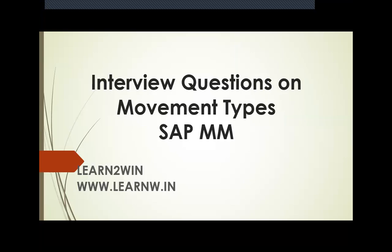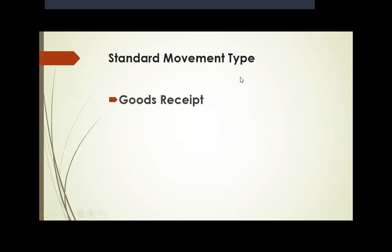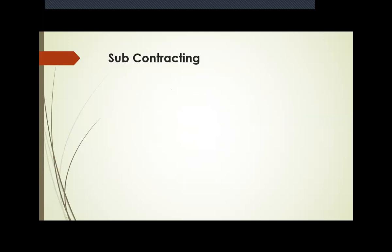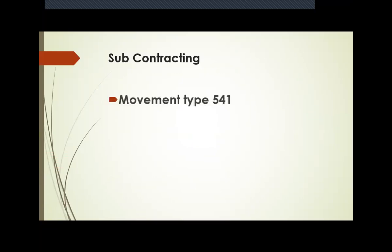The first one is the standard movement type for goods receipt, inward or inbound. That is 101. For subcontracting, it is 540.